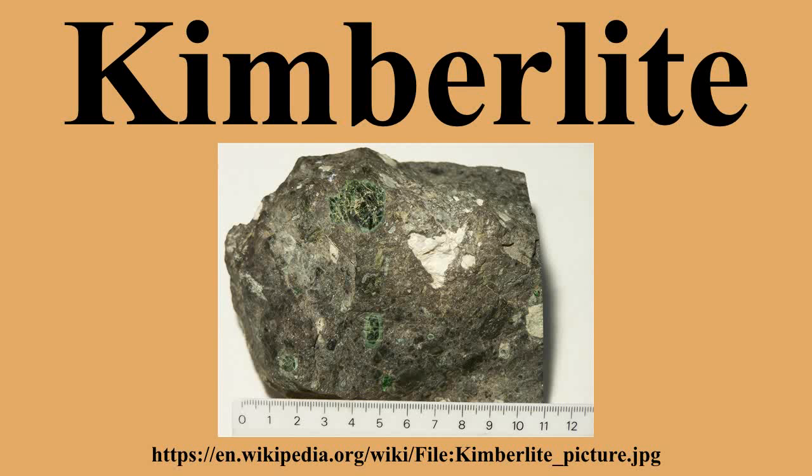Resorbed olivine macrocrysts and euhedral primary crystals of groundmass olivine are common but not essential constituents. Characteristic primary phases in the groundmass include zoned pyroxenes, spinel group minerals, Sr- and Ba-rich perovskite, Sr-rich apatite, Ba-rich phosphates, potassium barium hollandite group minerals, Nb-bearing rutile, and Mn-bearing ilmenite.